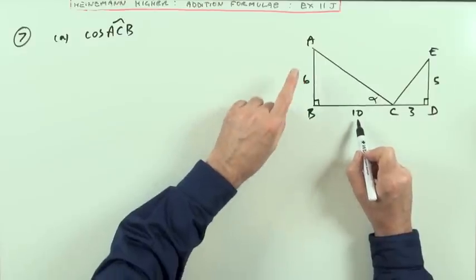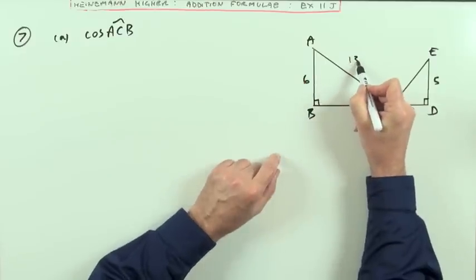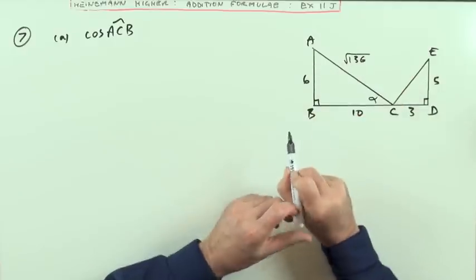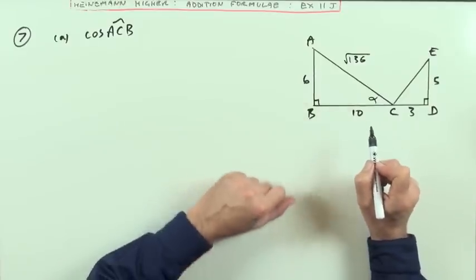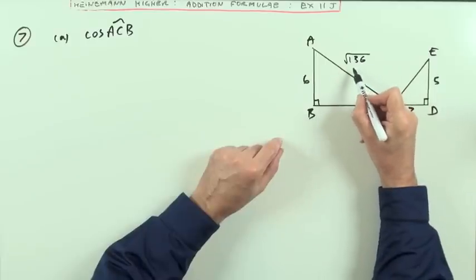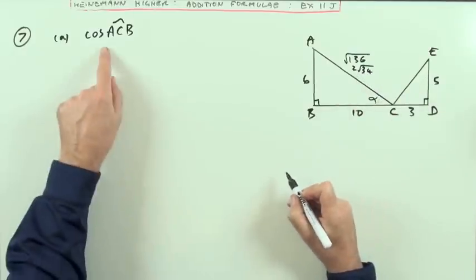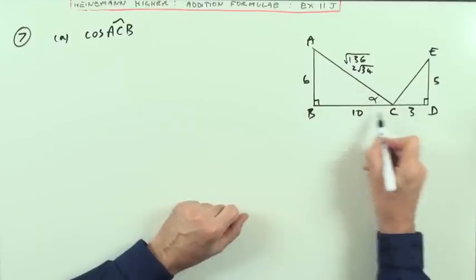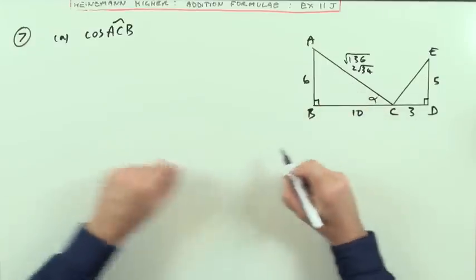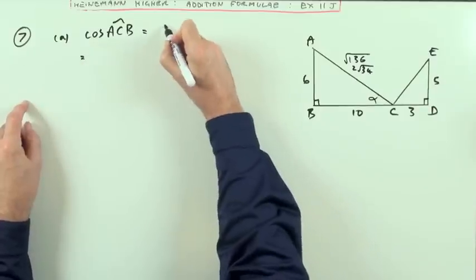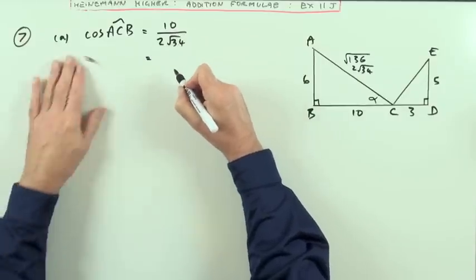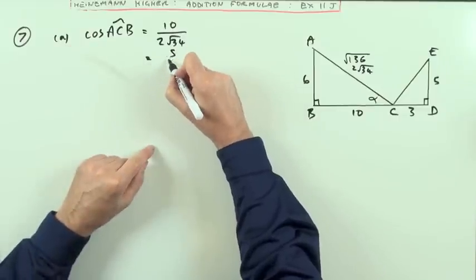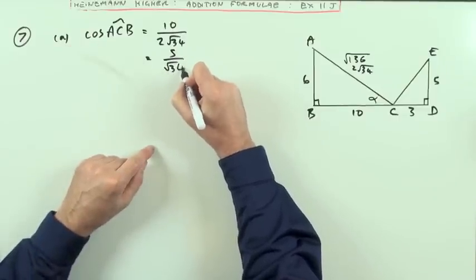So 6 and 10 using Pythagoras, 36 and 100, 136. That would be the square root of 136. Now, 4 goes into that, obviously, because that's 2 times something, and that's 2 times something. So 4 into that would be 4 times 34. Take the 4 out, 2 root 34, which means the cosine of ACB is going to be the adjacent, which is 10, over 2 root 34, and then that will just cancel to 5 over root 34.